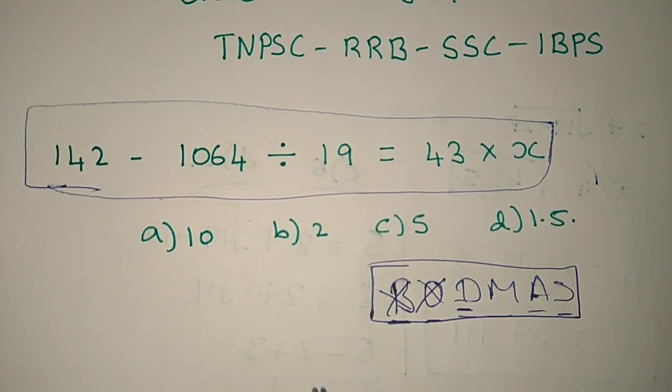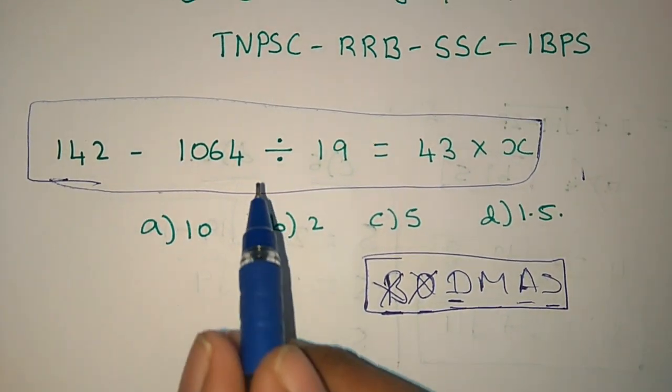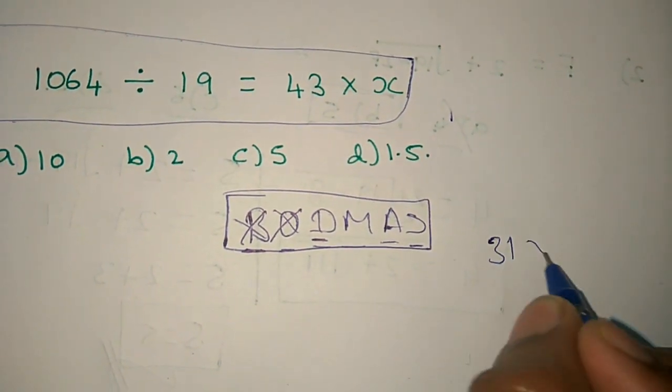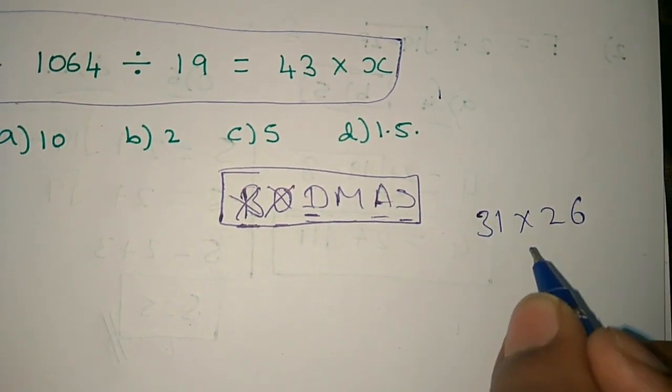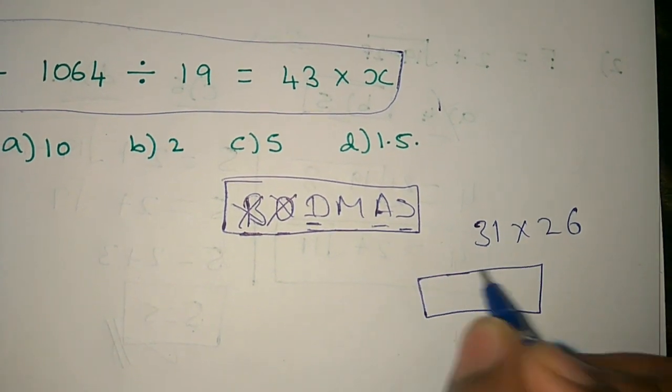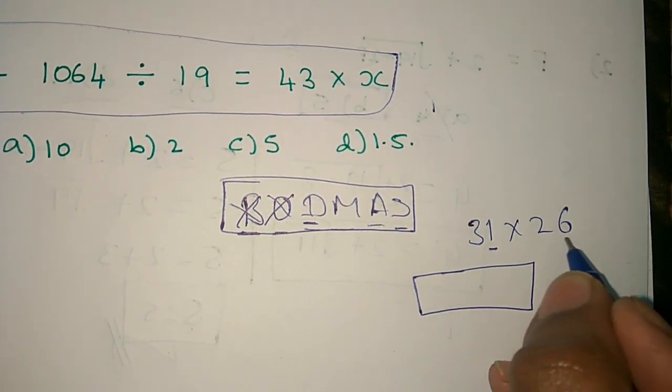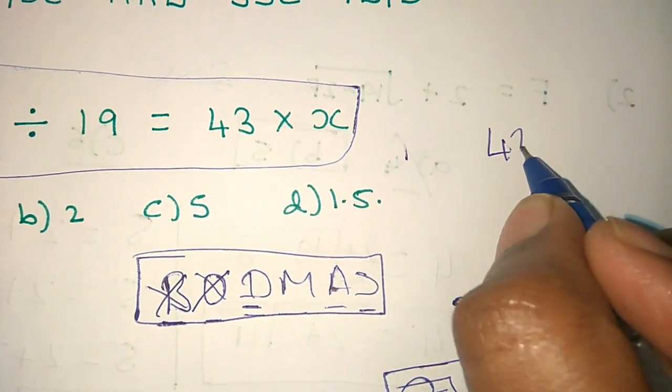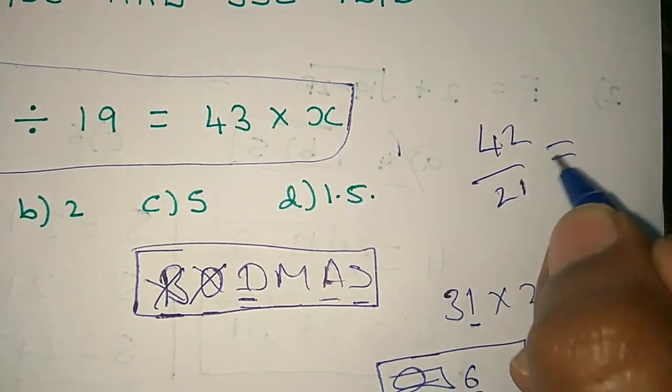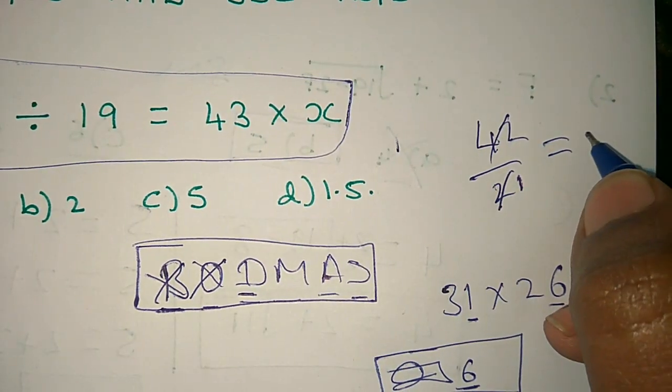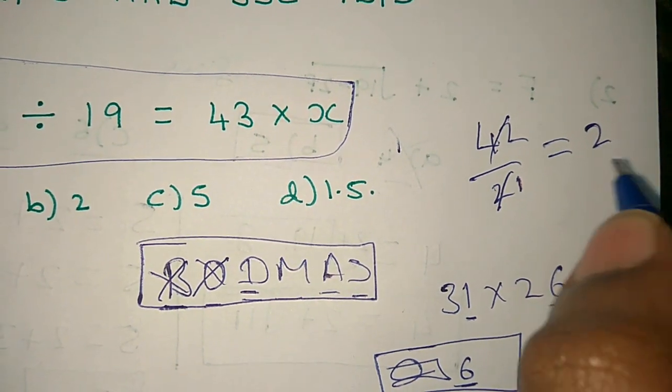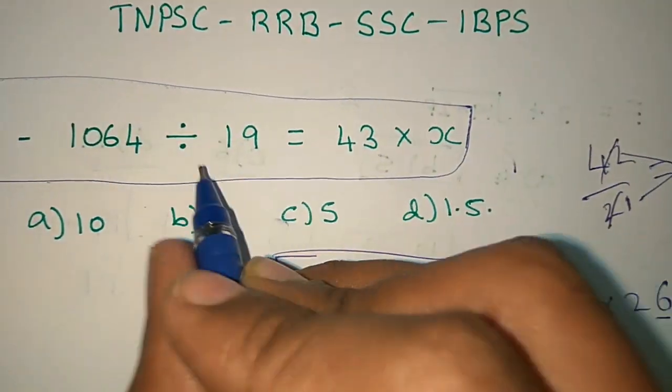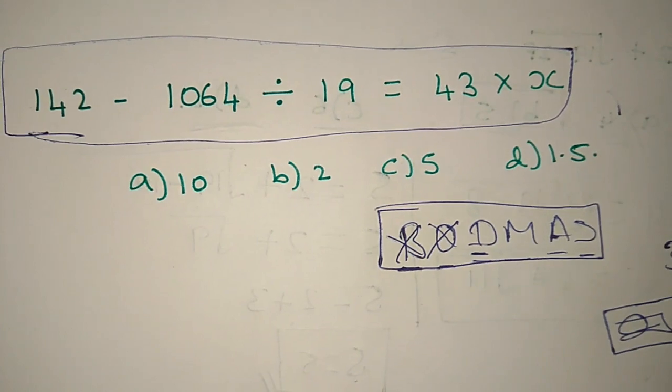1064 divided by 19. How do we do this? Now, we can get our unit digits. Now, it is 31 into 26. If you do this, you will get a value. But the shortcut is 1 into 6. If we add 42 into 21, we will add 2. If we add 2, we will add 1 digit. We will add 2 to 2. So, let's see how it will be applied.